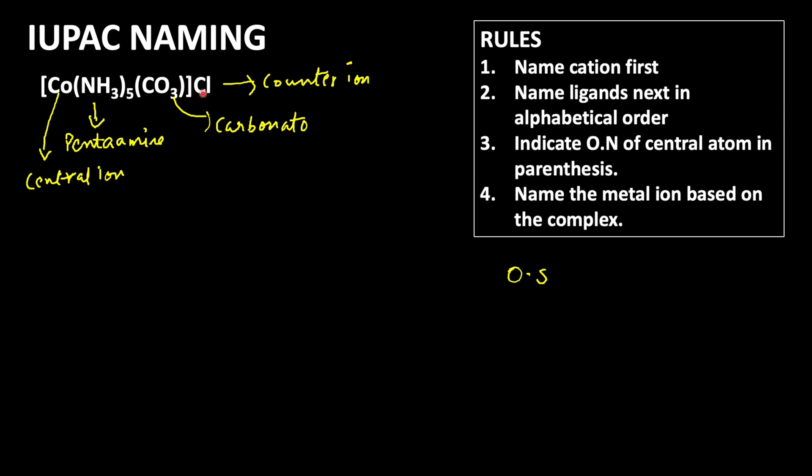The counter ion, chloride ion, carries minus one charge. So the complex ion, the net charge of the complex cation, must be plus one.